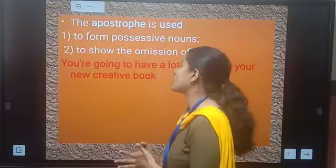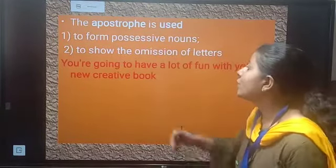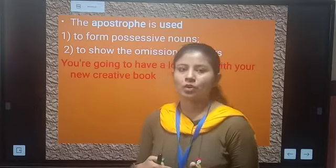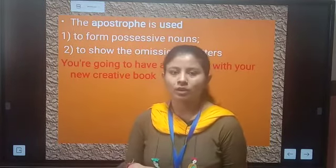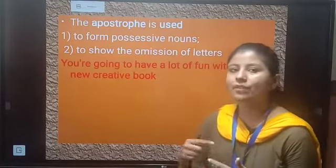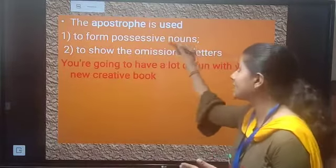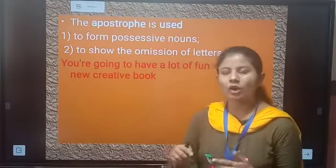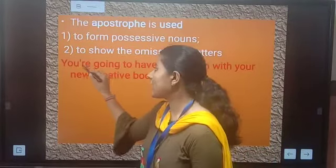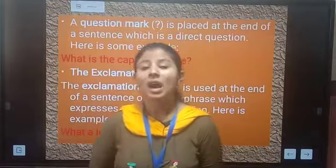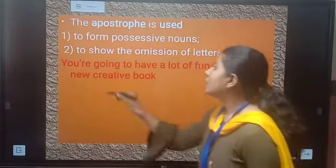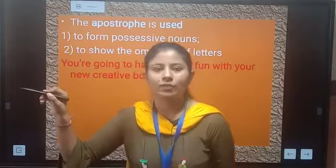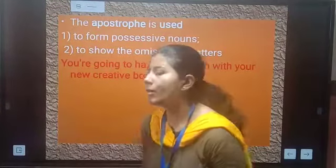Now the last punctuation mark — the apostrophe. Where to use an apostrophe? We use an apostrophe to form possessive nouns, meaning if you are showing ownership. For example: 'Ram's pen', 'Rita's book'. We have used an apostrophe to show possession. We also use an apostrophe to show the omission of letters. Sometimes letters are skipped — like 'you are' becomes 'you're'. Here the letter 'a' is missed and we use an apostrophe to show that omission.